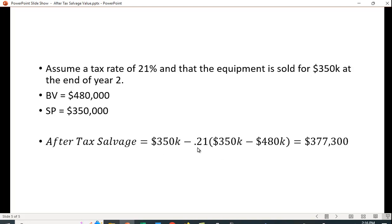Again, it's going to be the sale price minus the difference of the selling price and the book value times the tax rate. Here you'll notice this is more than we're selling it for because we're getting some tax savings.